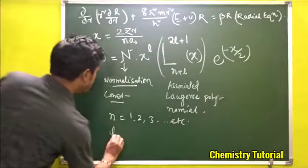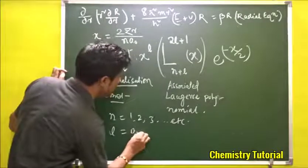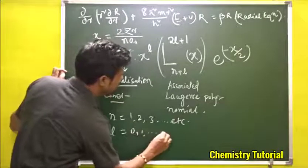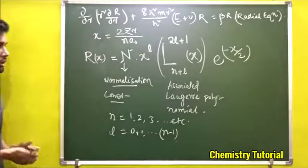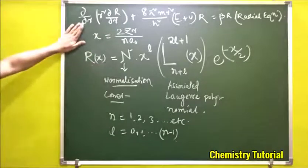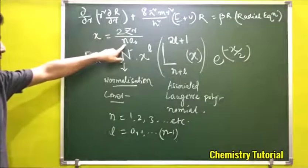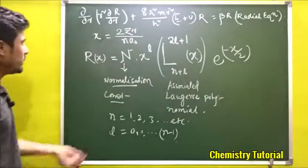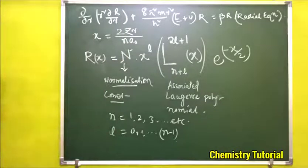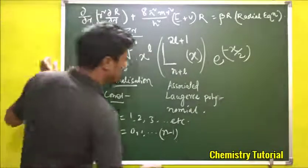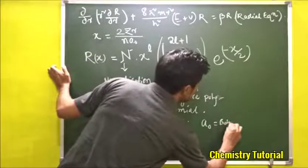The angular quantum number l is an integer ranging from 0, 1, 2, up to n−1. So this is the radial equation where x equals twice of z·r divided by n·a₀, where n is the principal quantum number, l is the angular quantum number, and a₀ is the Bohr radius — remember this.